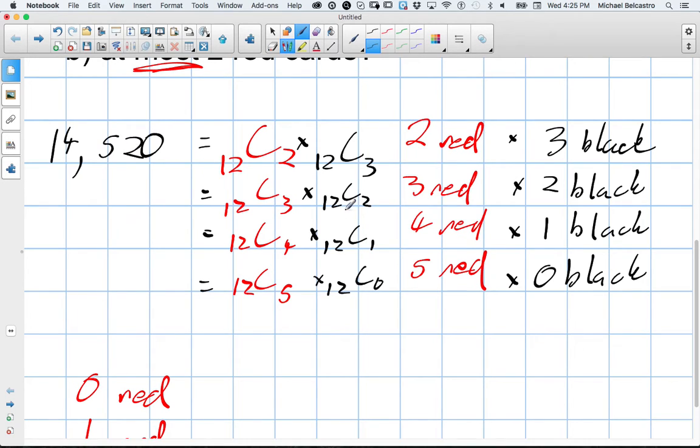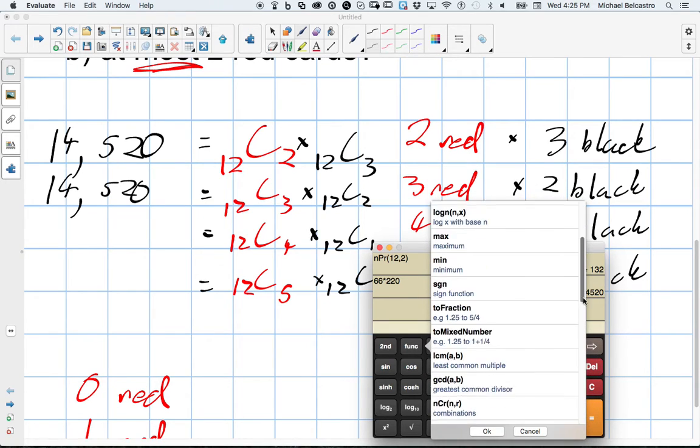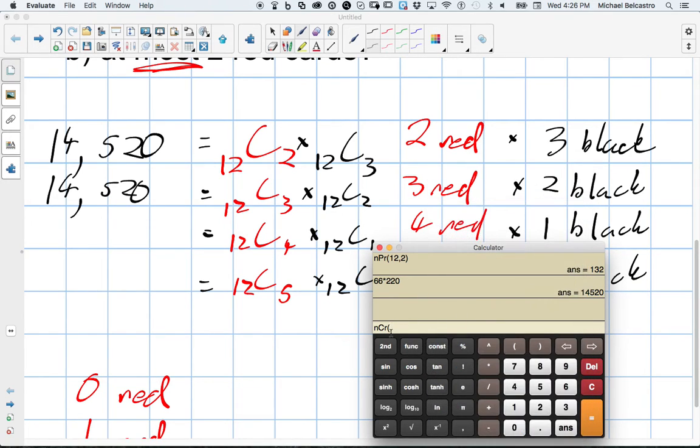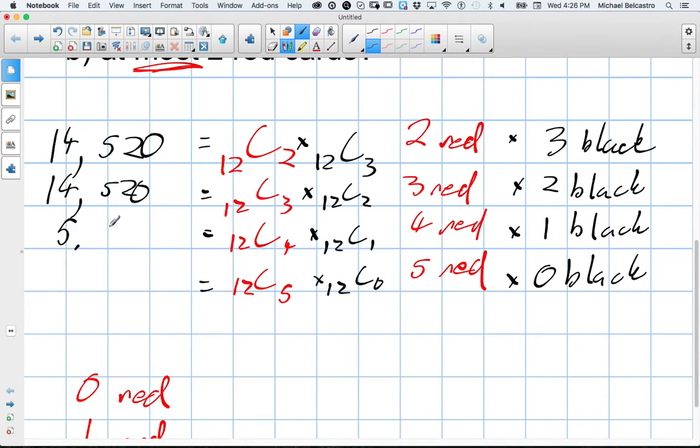The very next one is the exact same thing, just in a different order. So that's going to be 14,520. And then we can find the combinations for these two. How many ways can we rearrange? Can we find four out of 12? And how many ways can we get one out of 12? That's going to be 495 multiplied by 12, which equals 5,940. 5,940.